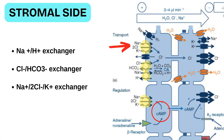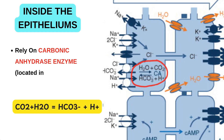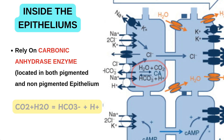That's where the enzyme carbonic anhydrase steps in. It is present in both pigmented and non-pigmented epithelial cells. It catalyzes the hydration of carbon dioxide, leading to the formation of bicarbonate and hydrogen ions, which fuel further ion exchange and help drive aqueous formation.